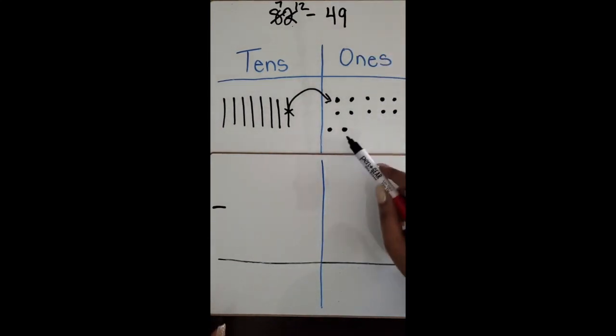So I'm going to cross out nine ones: one, two, three, four, five, six, seven, eight, nine. I still have three ones remaining.